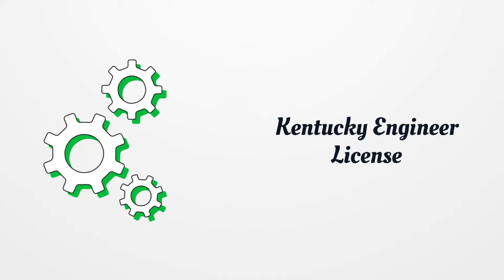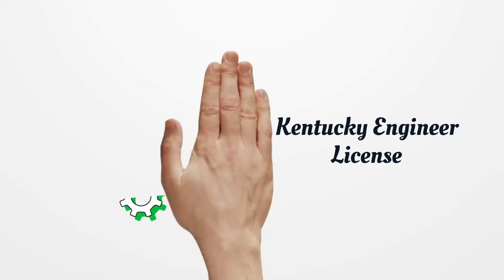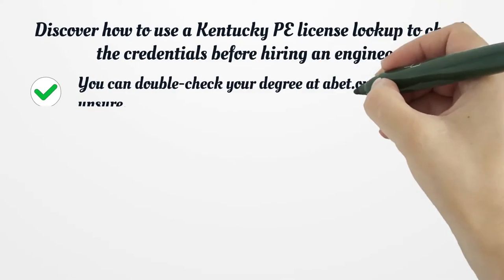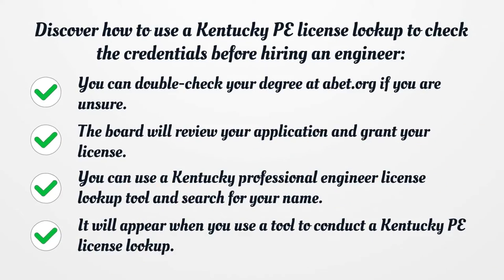Kentucky Engineer License. Discover how to use a Kentucky PE License lookup to check the credentials before hiring an engineer. You can double-check your degree at abet.org if you are unsure. The board will review your application and grant your license. You can use a Kentucky Professional Engineer License lookup tool and search for your name. It will appear when you use a tool to conduct a Kentucky PE License lookup.